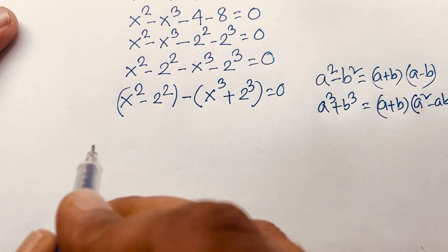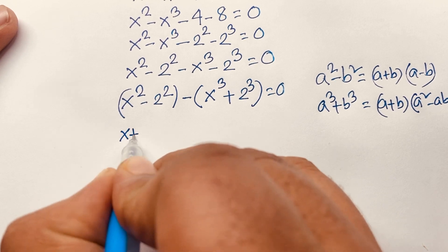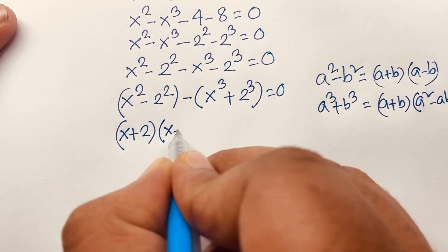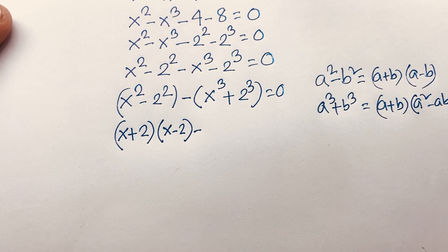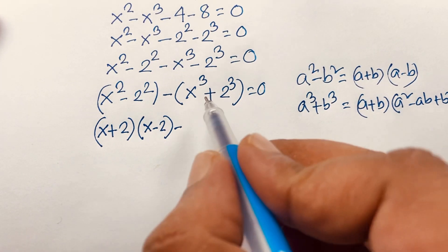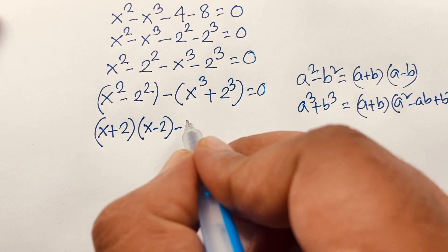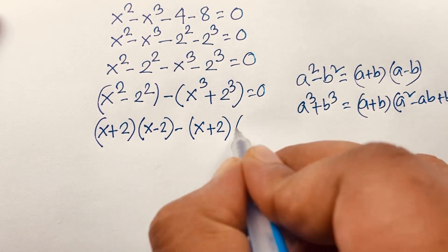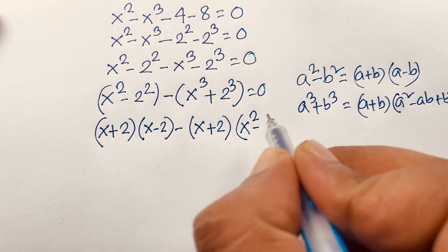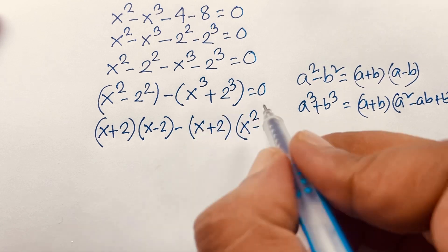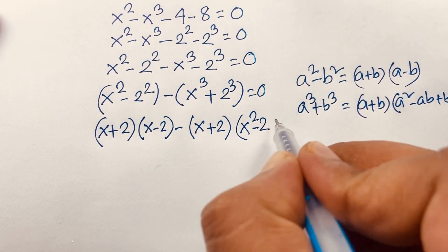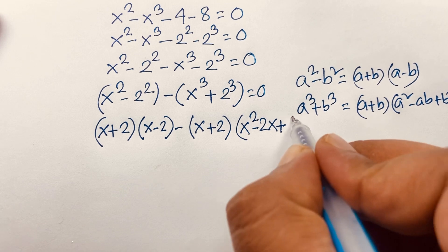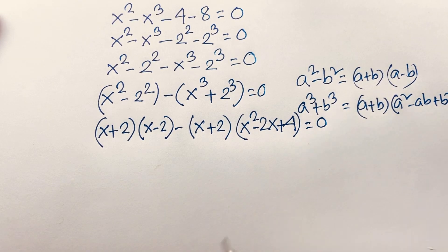For x squared minus 2 squared, applying the identity gives (x + 2)(x − 2). For x cubed plus 2 cubed, applying the identity gives (x + 2)(x squared minus 2x plus 2 squared), where 2 squared equals 4. So we have (x + 2)(x − 2) minus (x + 2)(x squared minus 2x + 4) equals 0.